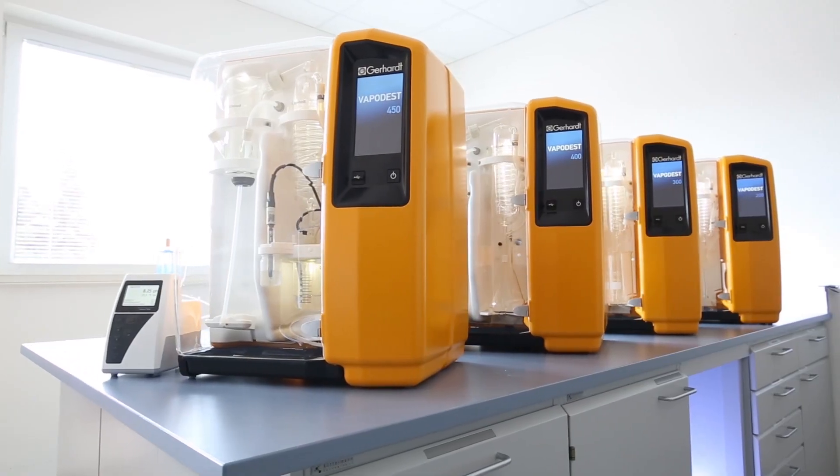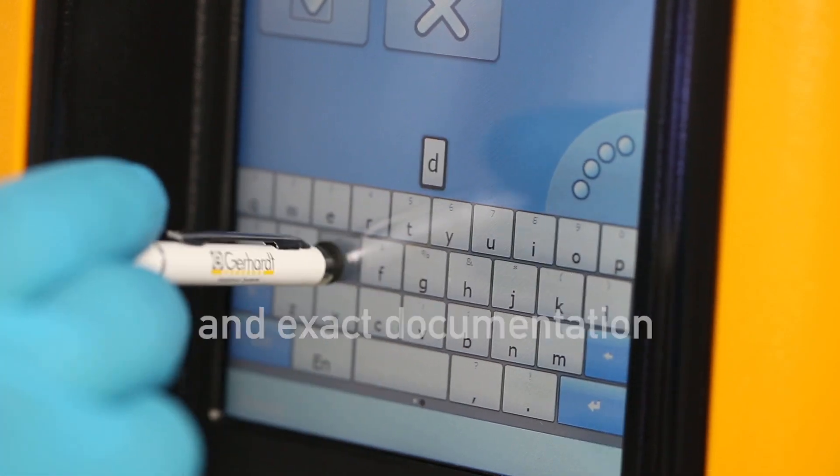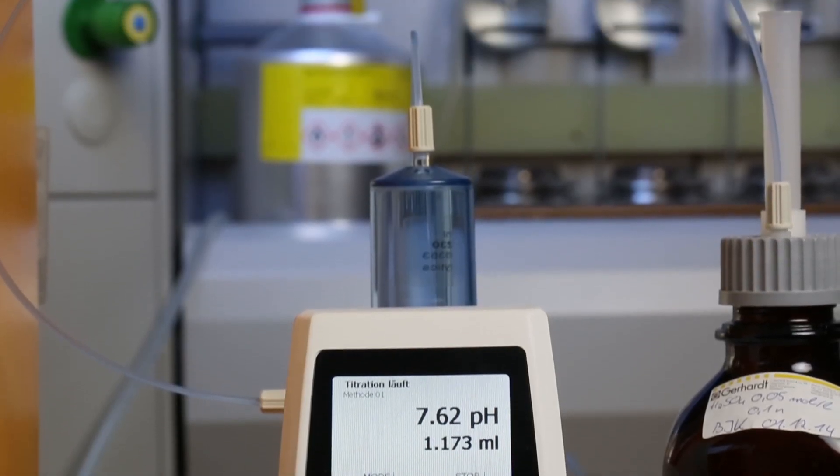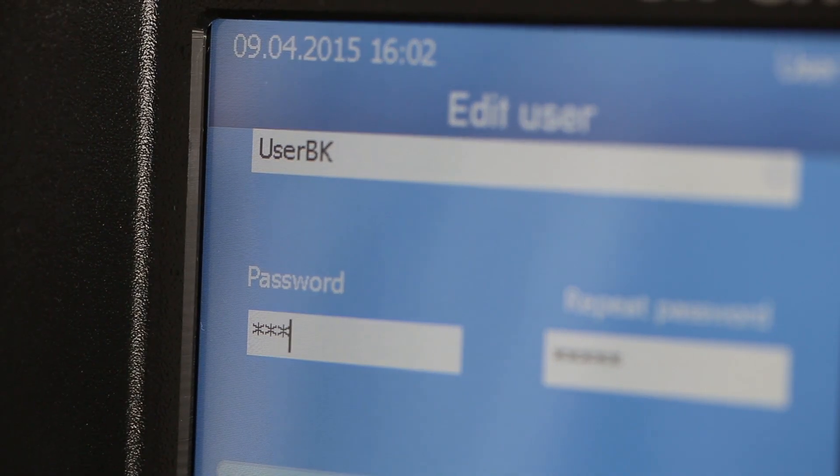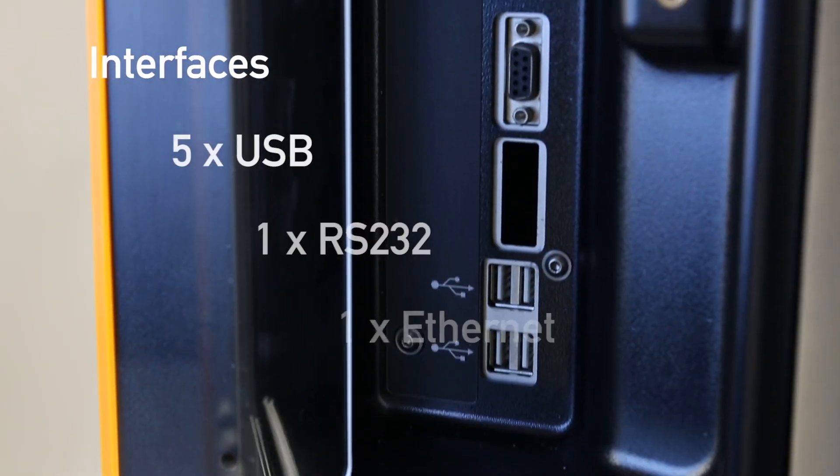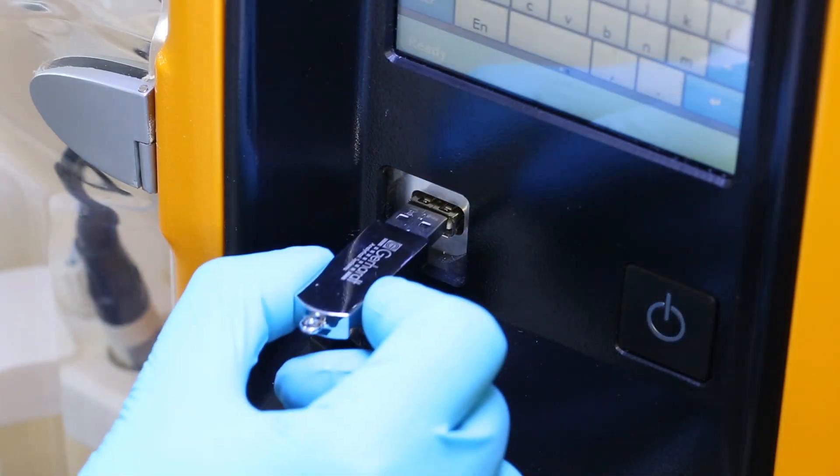Our new VapoDest devices now also do the laborious documentation tasks for you. They can record all relevant user, process and device data required by accredited laboratories in accordance with ISO 17025 and GLP. You can export the device data to LIMS by USB stick.